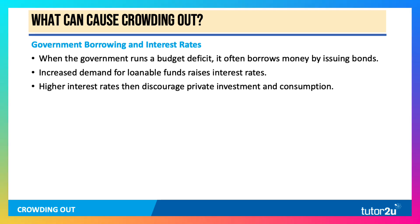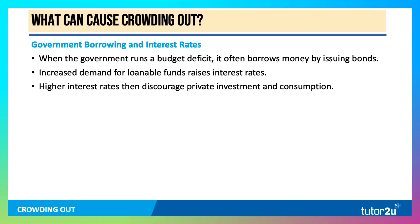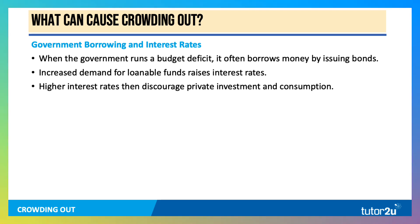You borrow money by issuing bonds, and the increased demand for loanable funds in the market by the government raises interest rates. We'll show how that works in a second in the diagram. Essentially, if the government's borrowing money, it's making a bigger claim on the money that's available for people to lend out. If the government's borrowing money, that tends to raise interest rates, and it's that which discourages private investment and consumption.